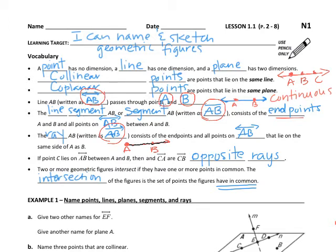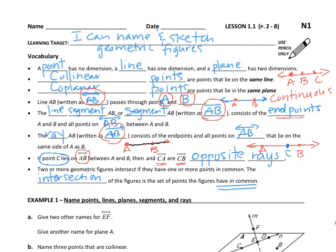If point C lies on line AB between A and B, then ray CA and ray CB are opposite rays. So let's draw that diagram. If we have a line called AB, here's a capital A, here's a capital B, and point C lies somewhere between A and B. That means the ray starting at C going toward A, and the ray starting at C going toward B, are considered opposite rays.